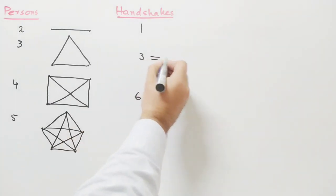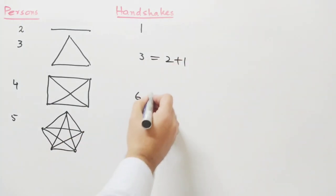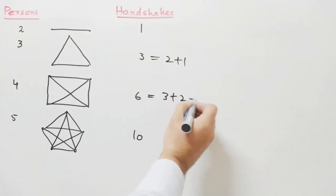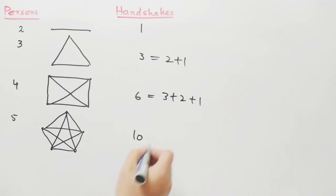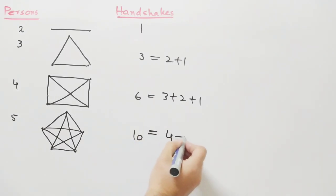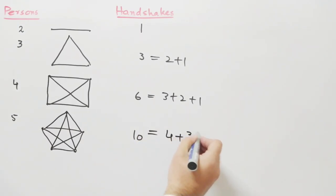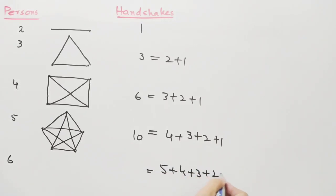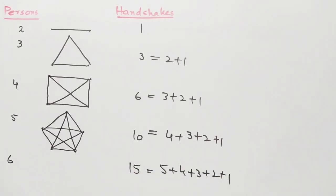Now we can write: three is equal to two plus one, six is equal to three plus two plus one, and ten is equal to four plus three plus two plus one. So look at the pattern. Now if we have six persons, we can write five plus four plus three plus two plus one, following the same pattern, which is equal to fifteen.